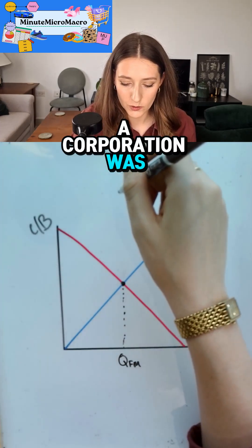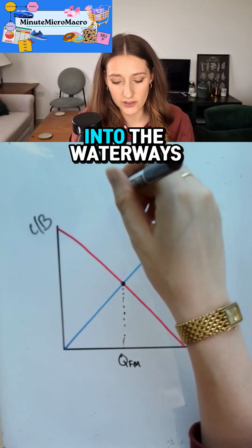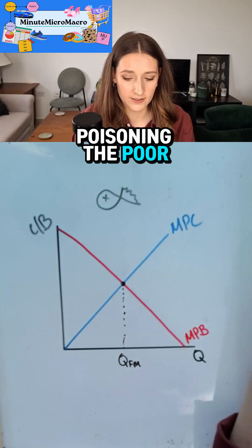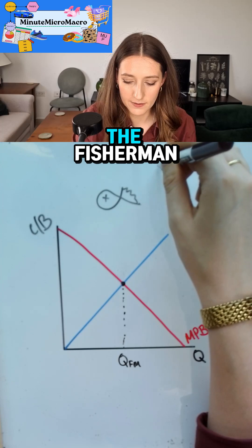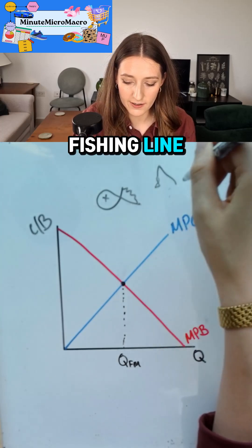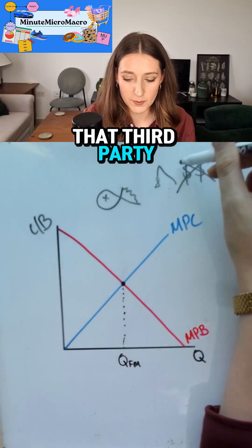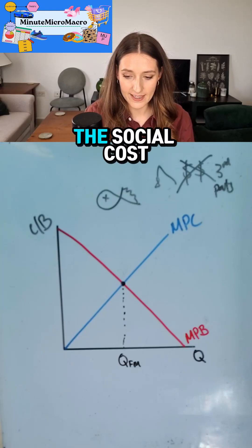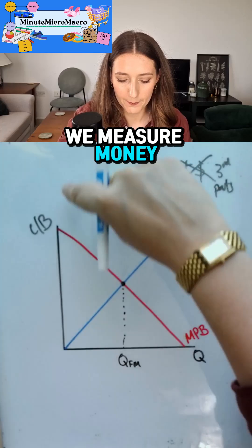For example, if a corporation was producing detergents and they were pouring those detergents into the waterways, and that was poisoning the poor little fishies, and then the poor little fishies died, which meant that the fisherman—that's my little fish on a fishing line—the fisherman made less money, there would be a cost to that third party that was not being accounted for.